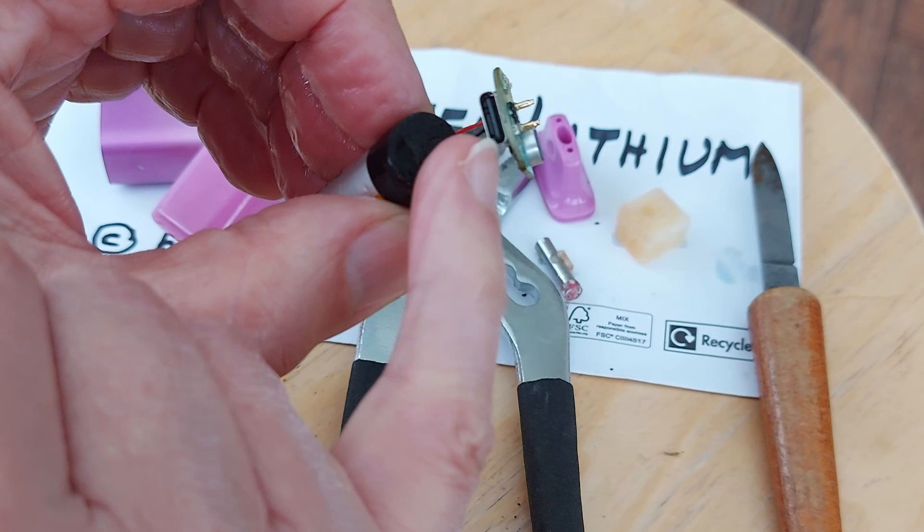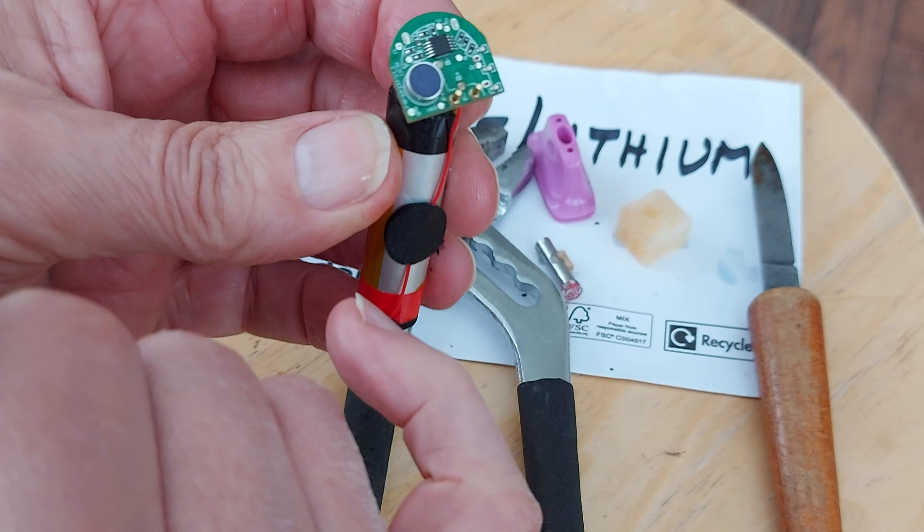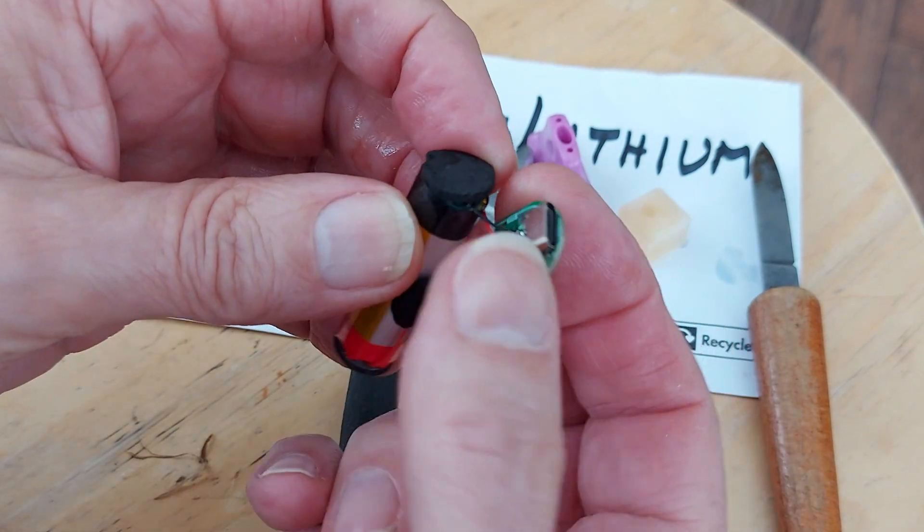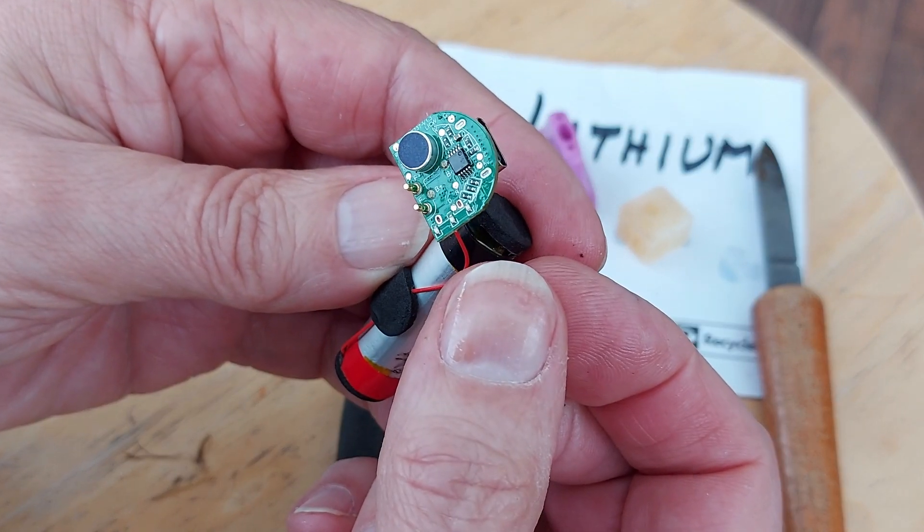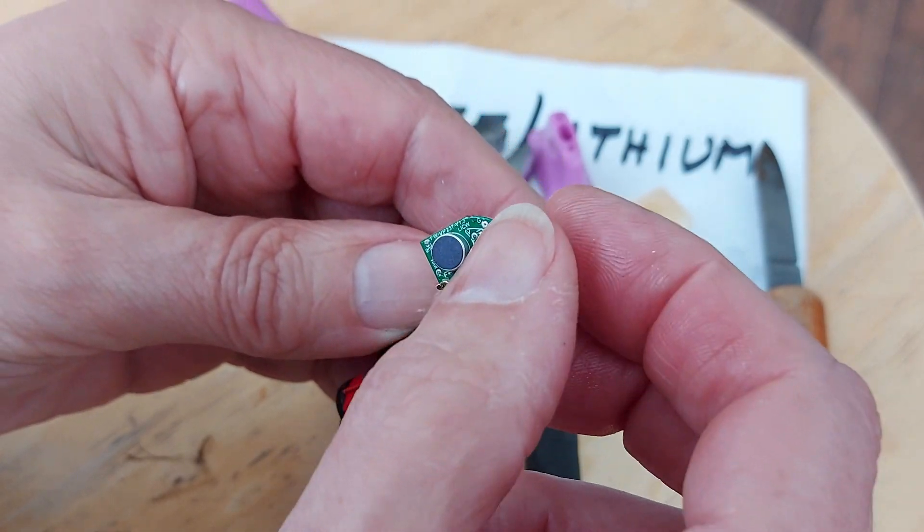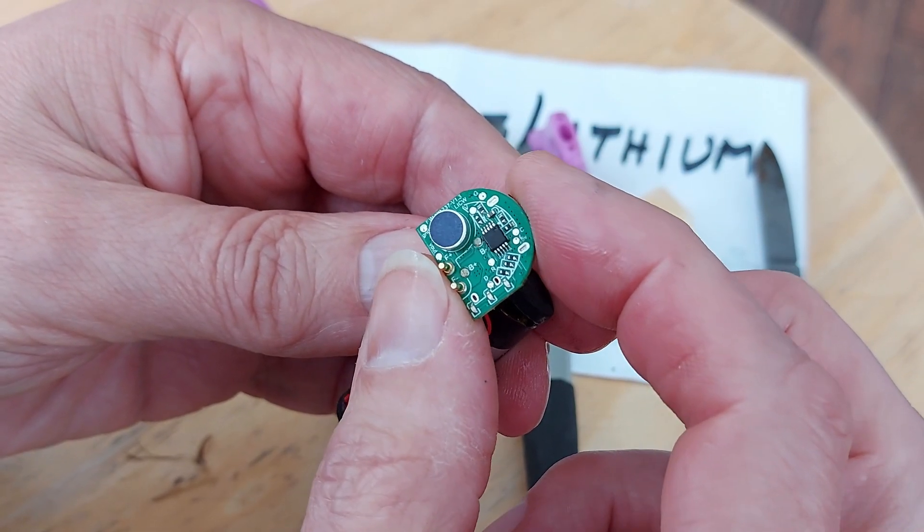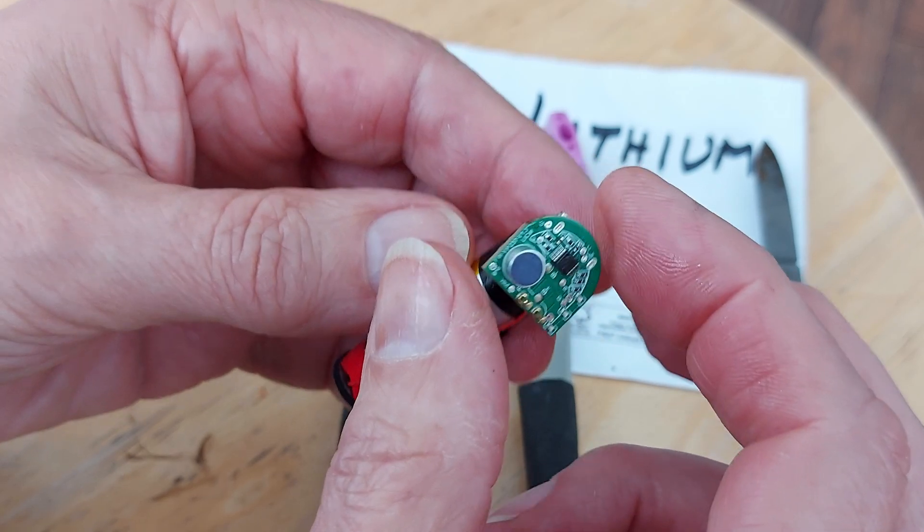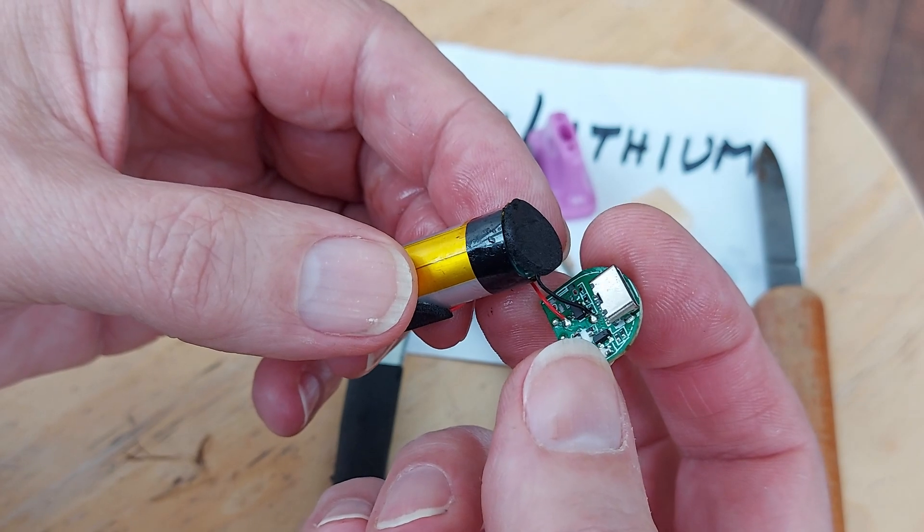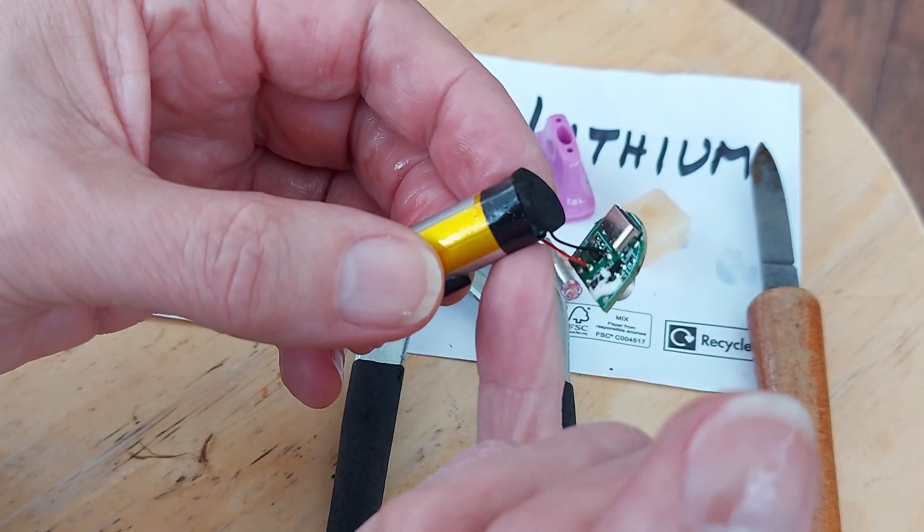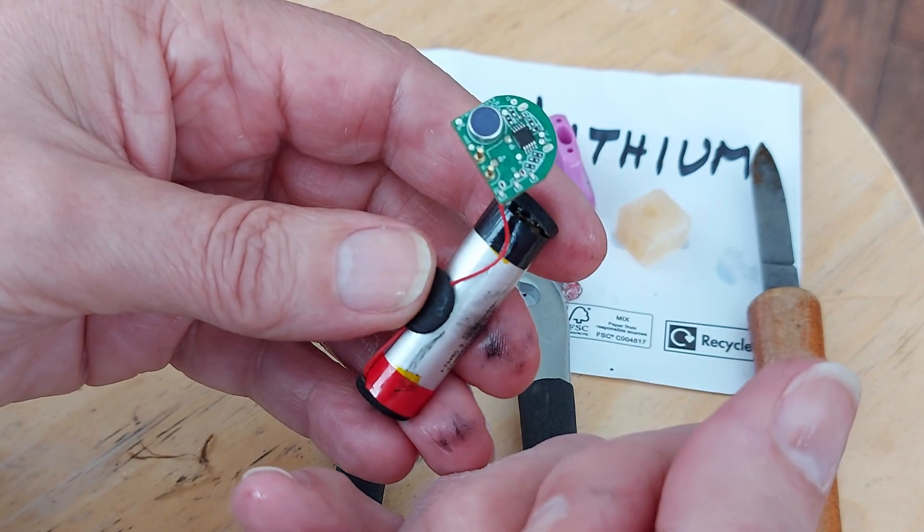USB-C to recharge the battery. I can't see a number on that little chip. There might be. But potentially, you could use that as it is to charge the battery and then bring some wires off it to run something else.